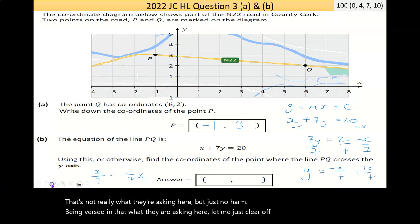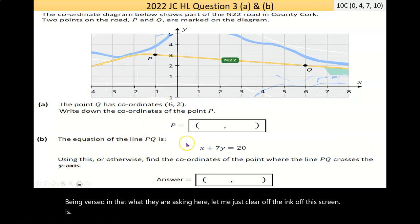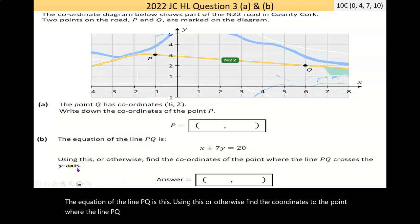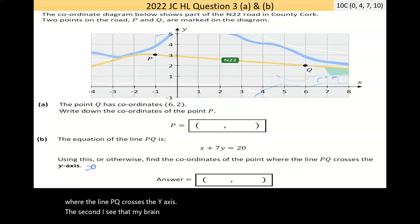Using this or otherwise, find the coordinates at the point where the line PQ crosses the Y-axis. The second I see that, my brain always, and this is a very important thing with coordinate geometry, all along the Y-axis, the value of X is 0. All along this line here, it's like 0, 5, 0, 4, 0, 3, 0, 2, etc.